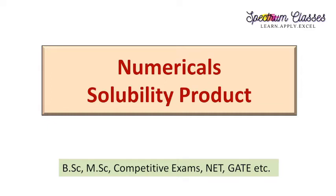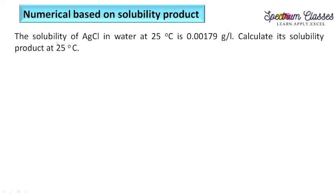The first numerical: the solubility of silver chloride in water at 25 degrees centigrade. Solubility is dependent on temperature — on increasing the temperature, solubility increases. The solubility is given as a certain value in grams per liter. Calculate the solubility product at 25 degrees centigrade. Since both temperatures are the same, no need to worry about temperature.